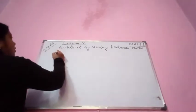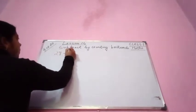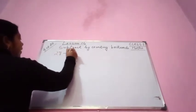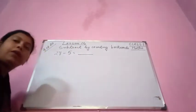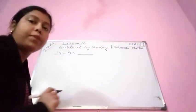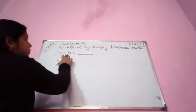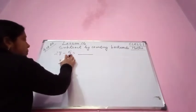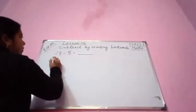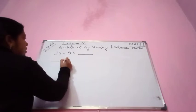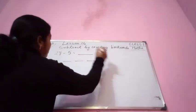Let us take the example of 27 minus 5. 27 minus 5 equals how much? So we have to subtract 5 from 27. Just 5 places we are going to go backwards.